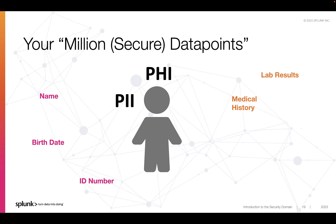Another example is information about payment card status and usage, and that is regulated via the payment card information or PCI standard. For example, the three-digit code on the back of most credit cards can never be stored by an organization, since if someone acquired that along with some other information, they could use your credit card without your authorization. I imagine we can all agree that this information should be protected, either for your privacy or to protect you from fraud.